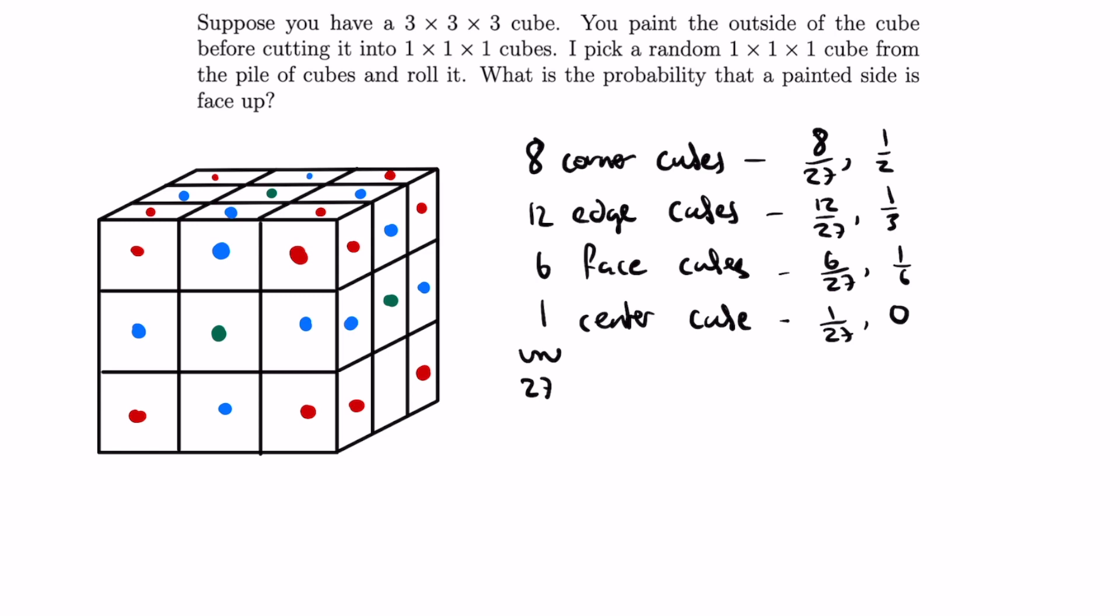Therefore, our expression for the probability that a painted side is face up after rolling one of the 27 cubes is 8 over 27 times 1 half, plus 12 over 27 times 1 third, plus 6 over 27 times 1 sixth, and evaluating this gives a nice expression of 1 over 3.